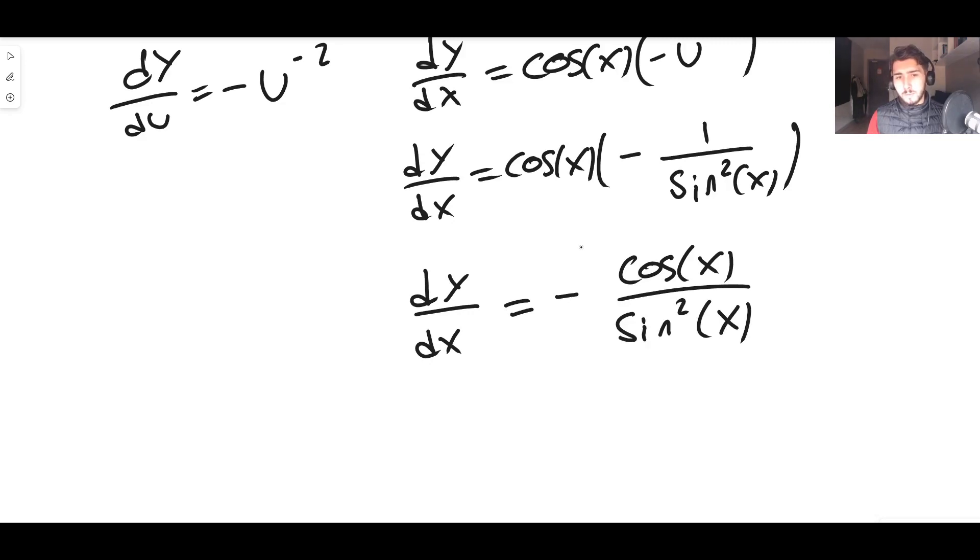Which means that dy/dx—well, we can split this up into cos over sin times 1 over sin. So this is minus cos(x) over sin(x) multiplied by 1 over sin(x).